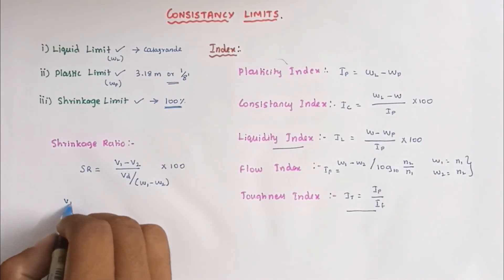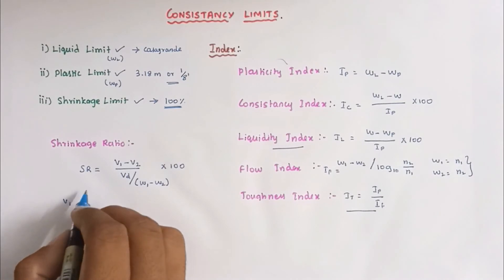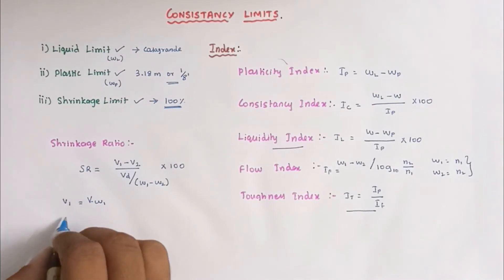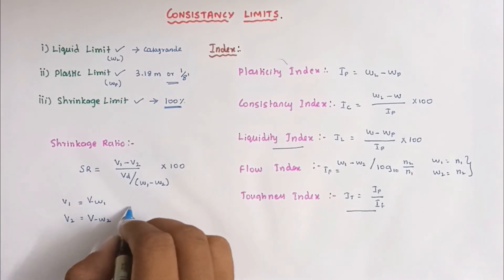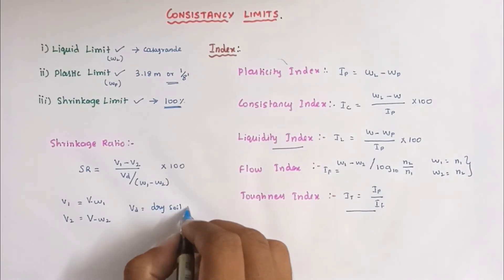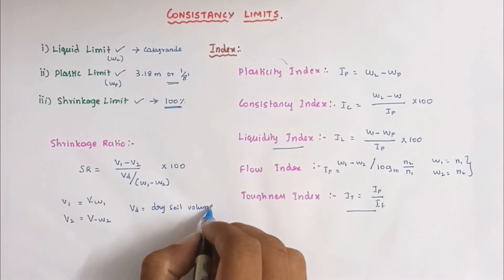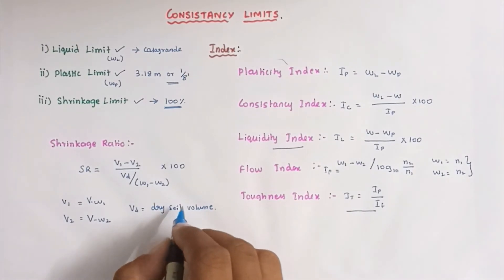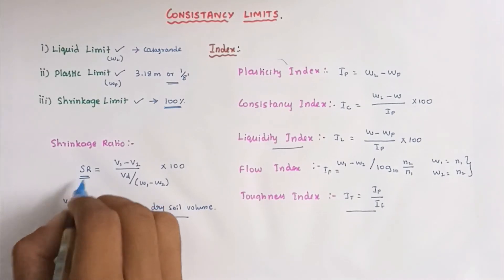V1 denotes the volume of soil sample at water content W1, corresponding to W1. V2 is the volume of soil mass at the corresponding water content W2. VD equals volume of dry mass, dry soil volume. From that we can find out the shrinkage ratio value.